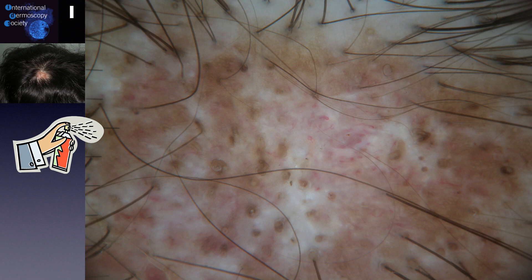From tricoscopy with immersion fluid, the scales disappear and we can better appreciate the telangiectasias, the brown keratotic plugs over the whole patch, the scattered brown discoloration of the skin, and the pearly whitish areas in the center.